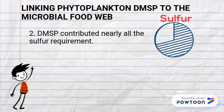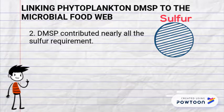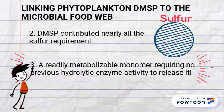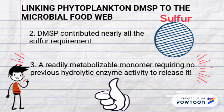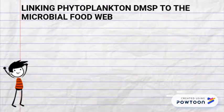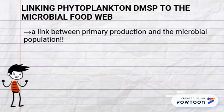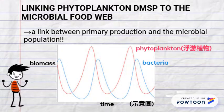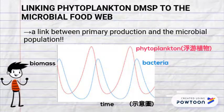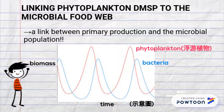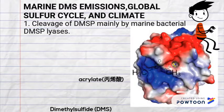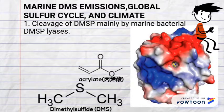DMSP can even reach 10% of the total carbon fixed. Second, DMSP contributes nearly all the sulfur requirement to the microbes at these locations. Most importantly, DMSP is a readily metabolizable monomer requiring no previous hydrolytic enzyme activity to release it. Thus, DMSP can serve as a link between primary production and the microbial population — the increase of bacterial biomass in numerous studies usually showed a distinct delay of several days after the phytoplankton bloom formation.